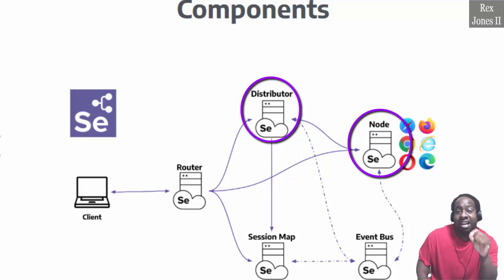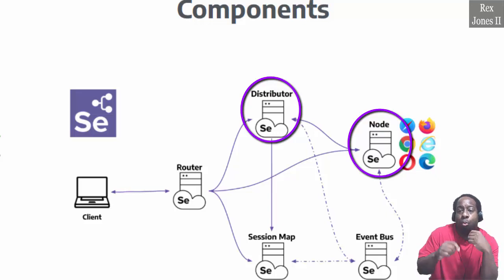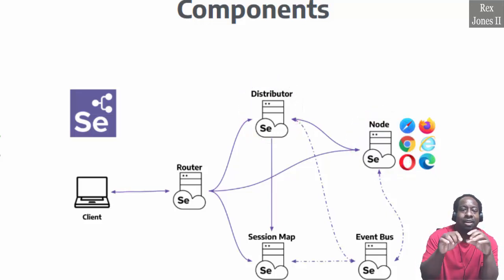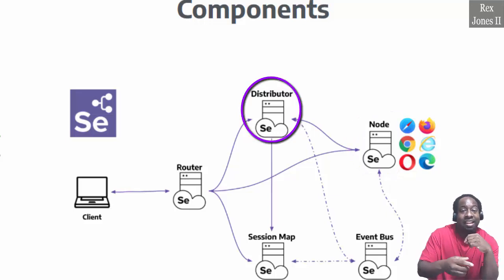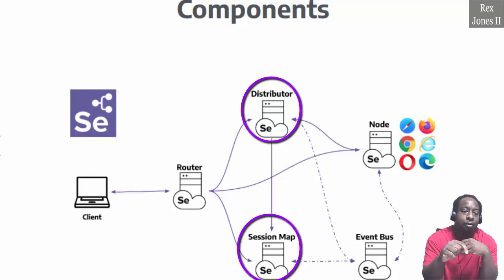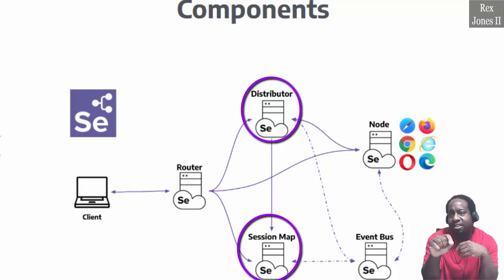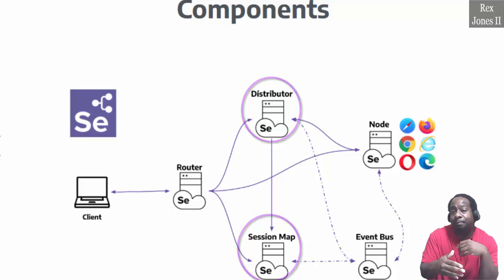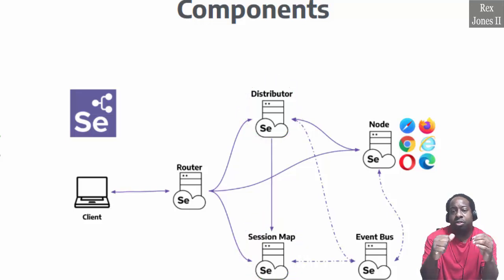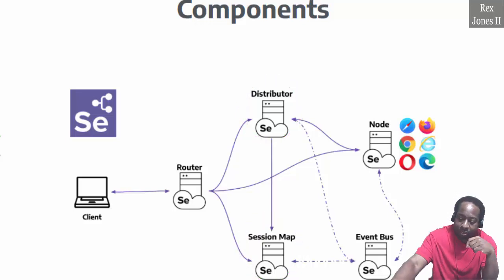After the distributor selects a node to run our test, the node responds back with a URL of the session. At this point, a session is created and the distributor sends information to the session map. The session map is important because it maps the session ID. That's how the grid works when there is a new session request.